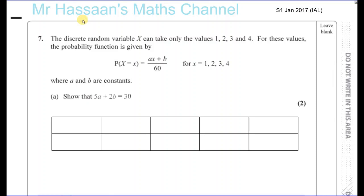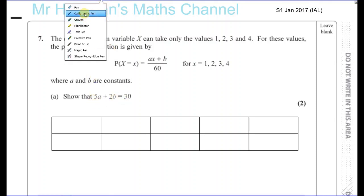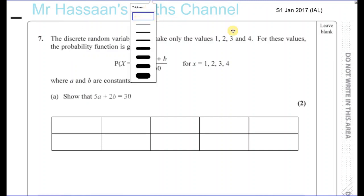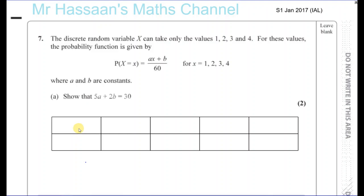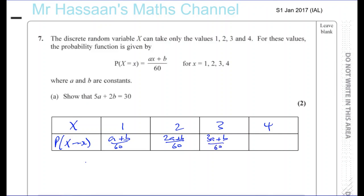We've got to show that 5a plus 2b equals 30. In order to do that, I'll make a probability distribution table. The values of x are 1, 2, 3, and 4. The probability when x is 1 is a plus b over 60; when x is 2, it's 2a plus b over 60; when x is 3, it's 3a plus b over 60; and when x is 4, it's 4a plus b over 60.